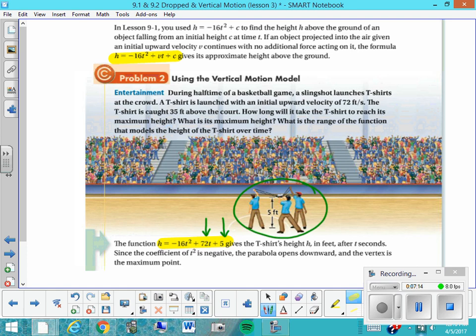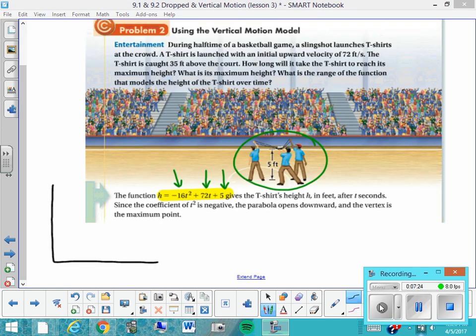Okay, since the coefficient of t-squared here, or a term, is negative, the parabola opens downward, and the vertex is the maximum point. Just to give you an idea what this would look like, let's do a quick sketch. I realize my starting height is 5 feet, so it's not quite at the origin, and it's going to reach a maximum height and then come down to complete the parabola.